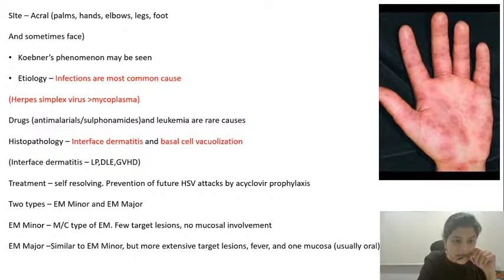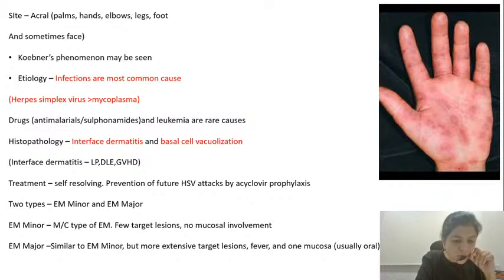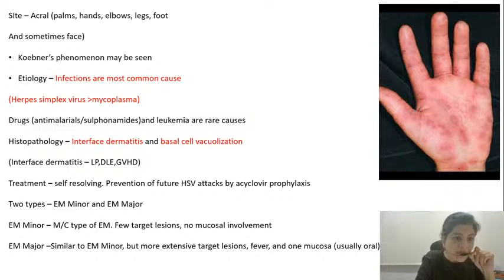One thing you need to remember extra is that Koebner phenomenon is a rare cause — erythema multiforme is a rare cause of Koebner phenomenon. What is Koebner phenomenon? Koebner phenomenon means that the lesions of a disease tend to come up at the sites of trauma. That trauma can be either mechanical or chemical, but the lesions will appear at the site of trauma. The common disorders which exhibit the Koebner phenomenon include psoriasis, lichen planus, and vitiligo. Rare causes include erythema multiforme and vasculitis.